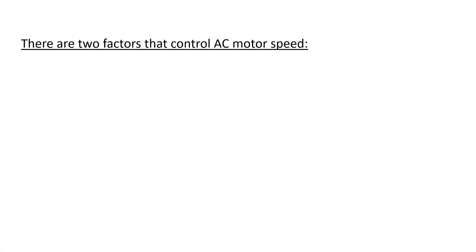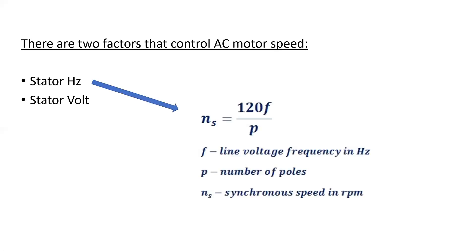There are two factors that control AC motor speed when it's driving a load. The first one is stator hertz. The second is the stator voltage, or the line voltage that's applied to a three-phase motor. Stator hertz is one that we can easily understand. Based on the synchronous speed calculation, we know the rotor is going to turn slightly slower than the synchronous speed based on the percent slip and the amount of load applied.